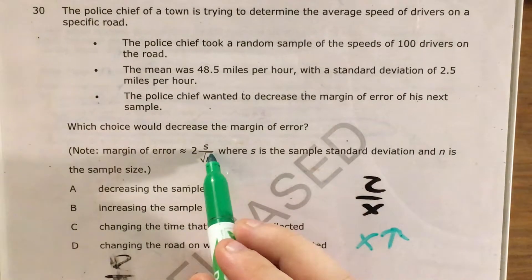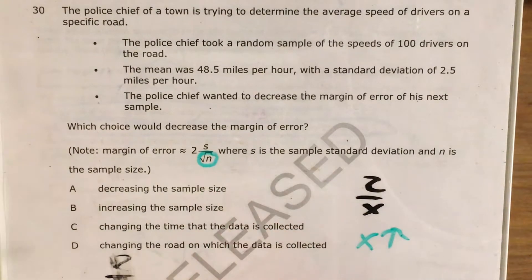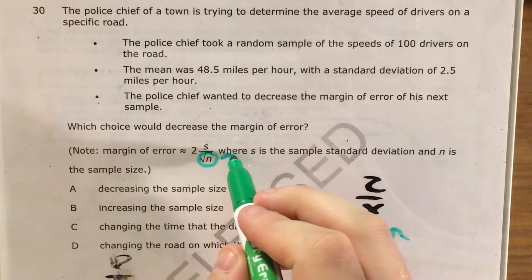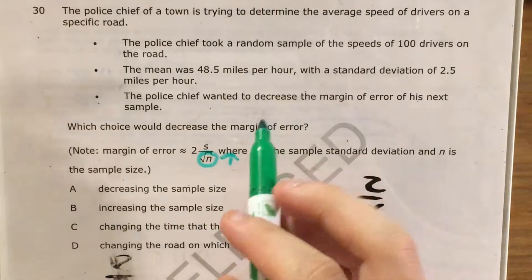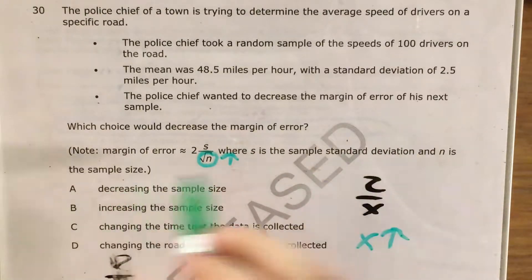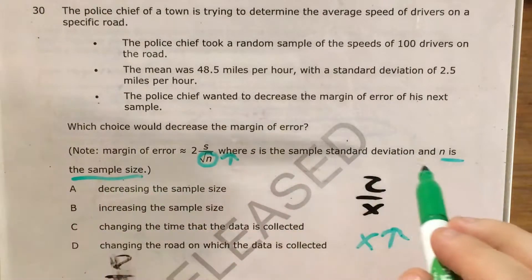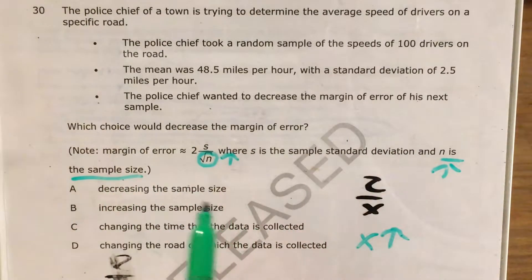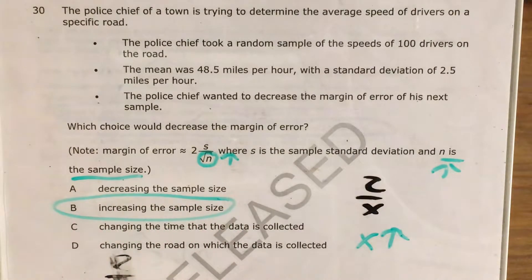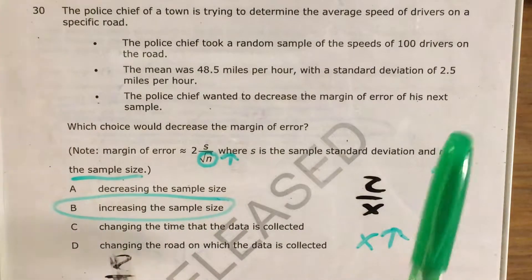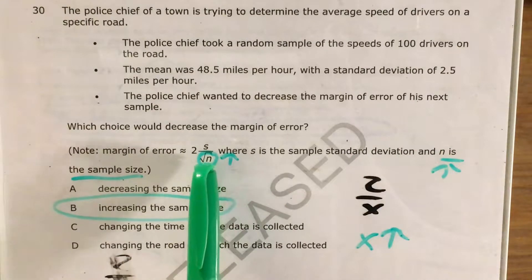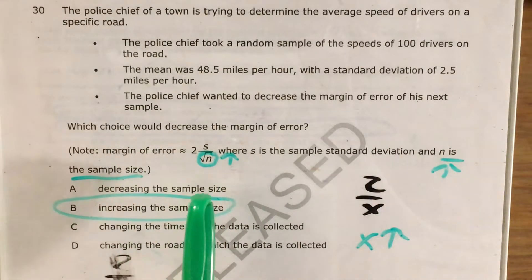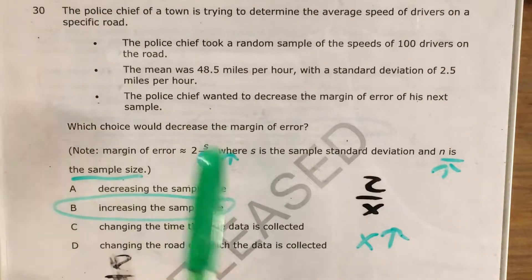And so if I look at my margin of error formula, I look at the square root of n, and if I want the square root of n to go up, the square root of n goes up as n goes up. n is the sample size. So it looks like my best bet to decrease the margin of error is to increase the sample size based on the fact that n, my sample size, shows up with a square root on top of it in the denominator of this expression, which represents margin of error.